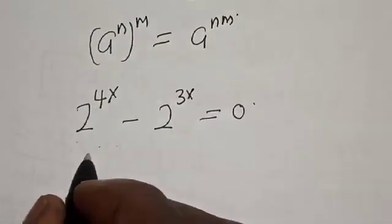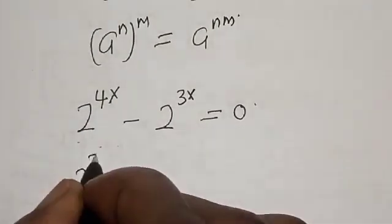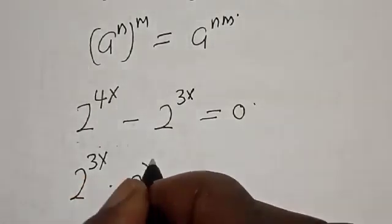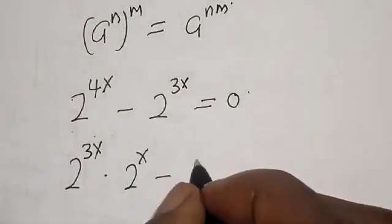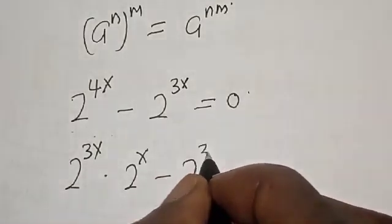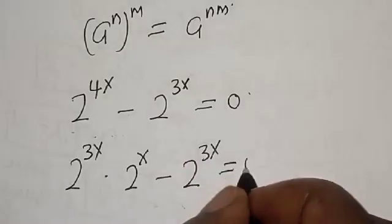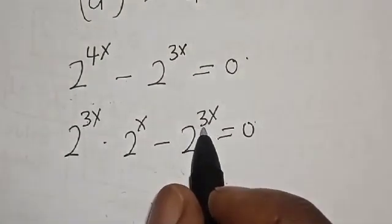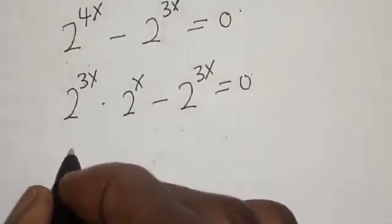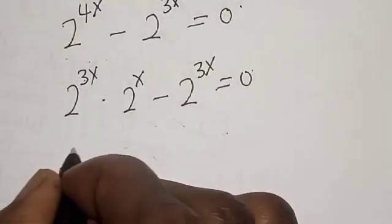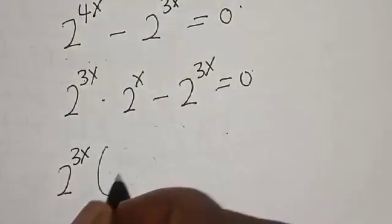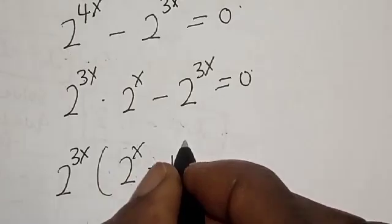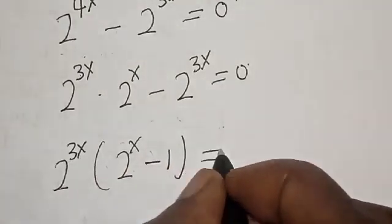Now, 2 raised to power 4x can be expressed as 2 raised to power 3x multiplied by 2 raised to power x, minus 2 raised to power 3x is equal to 0. We have 2 raised to power 3x as a common factor — let's factor it out. We have 2 raised to power 3x into bracket 2 raised to power x minus 1, is equal to 0.